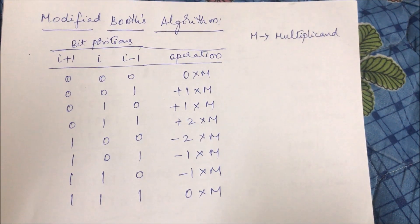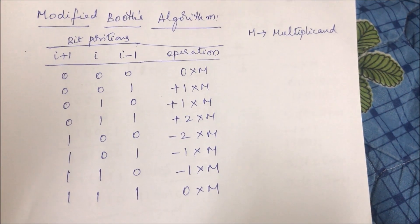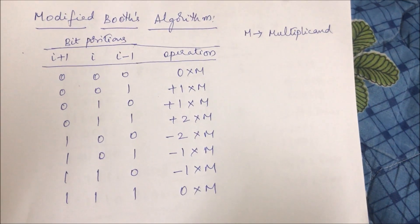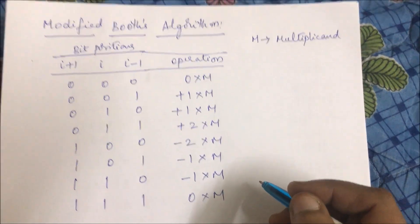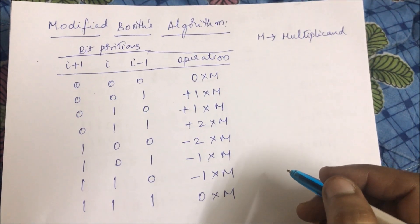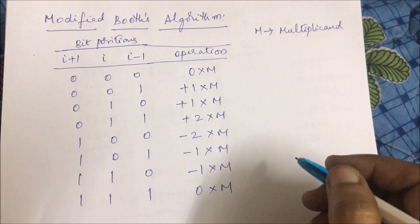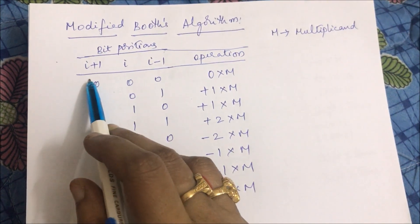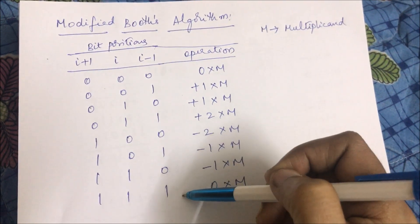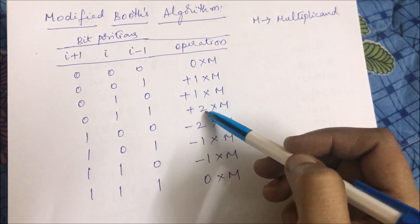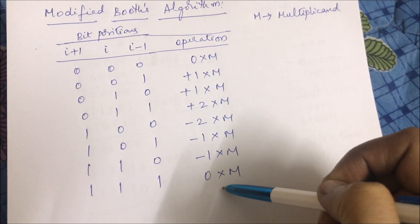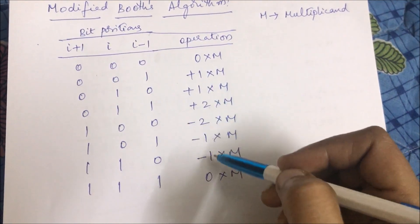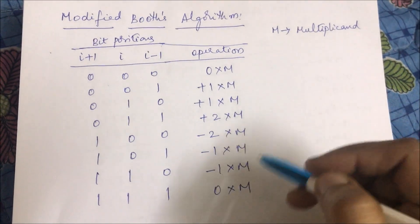In this video we are going to learn to perform a problem using Modified Booth's Algorithm. First of all we should know this table. This table can be derived from Booth's multiplication algorithm which is performed on two's complement numbers. If we see three combinations — i+1, i, i-1 — there are eight combinations, giving us 0, +1, +1, +2, and for the remaining combinations the complements: -2, -1, -1, and 0.